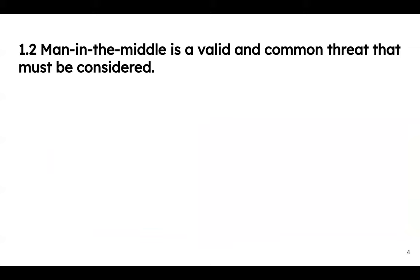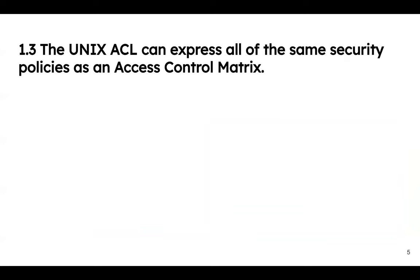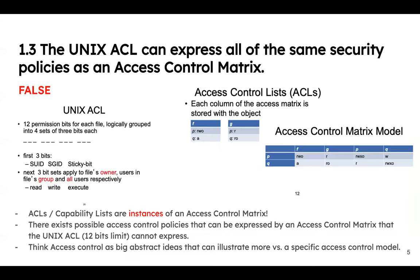Second question: man-in-the-middle is a valid common threat that must be considered — true. Third question: the UNIX ACL can express all the same security policies as the access control matrix — this caused a lot of confusion last semester. ACLs and capabilities are instances of the access control matrix. UNIX is a specific implementation, while the access control matrix is the big abstract concept that encompasses everything.